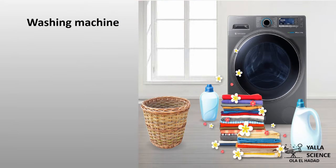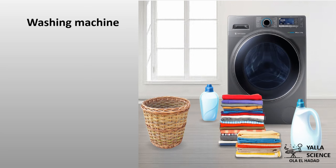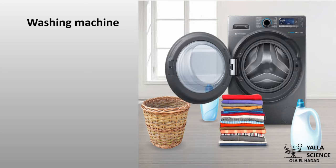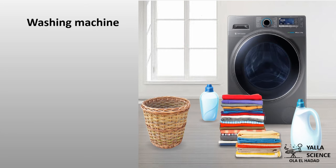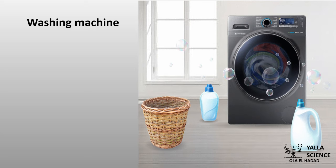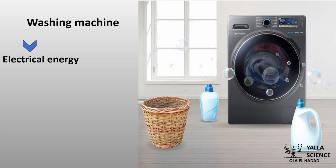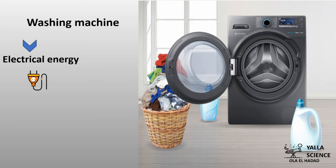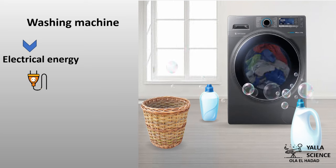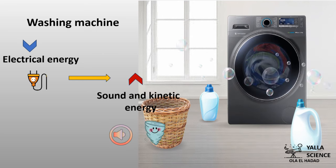Here is another example: the washing machine. The washing machine is used to wash our clothes. What is the input energy that gets inside the washing machine? Electrical energy. This electrical energy is converted into output energy. What is the output energy? It's sound and kinetic energy.